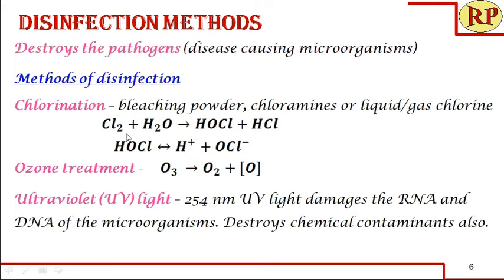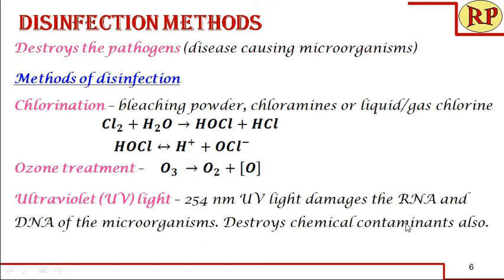We try to maintain the pH less than 7.5, at around 6.5, which is automatically maintained because HCl is formed — we need not reduce the pH. Next comes ozone treatment, where the nascent oxygen formed acts as a powerful oxidizing agent and destroys the germs. Ultraviolet light, especially at 254 nanometers, damages the nucleic acid components — RNA and DNA — present in the microorganisms, and also destroys pollutants from industrial solvents and similar sources.